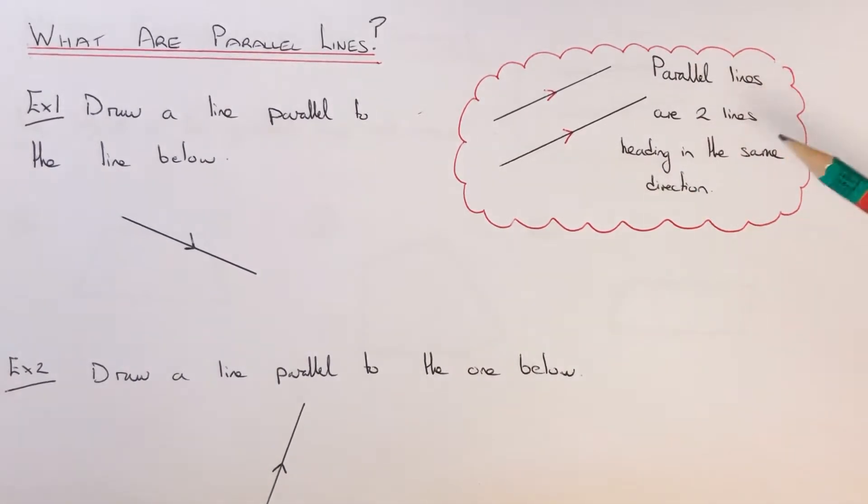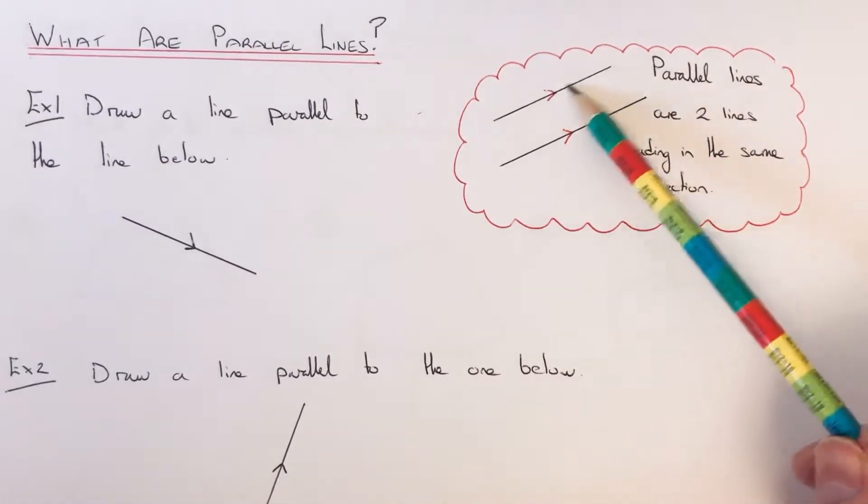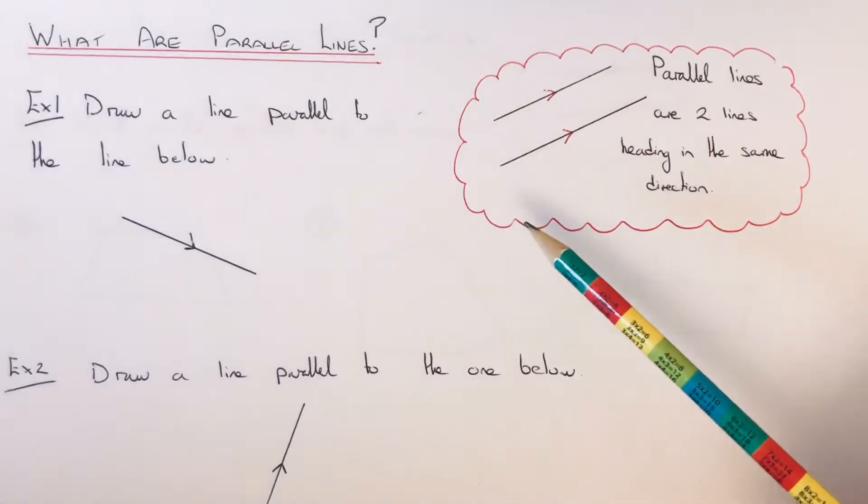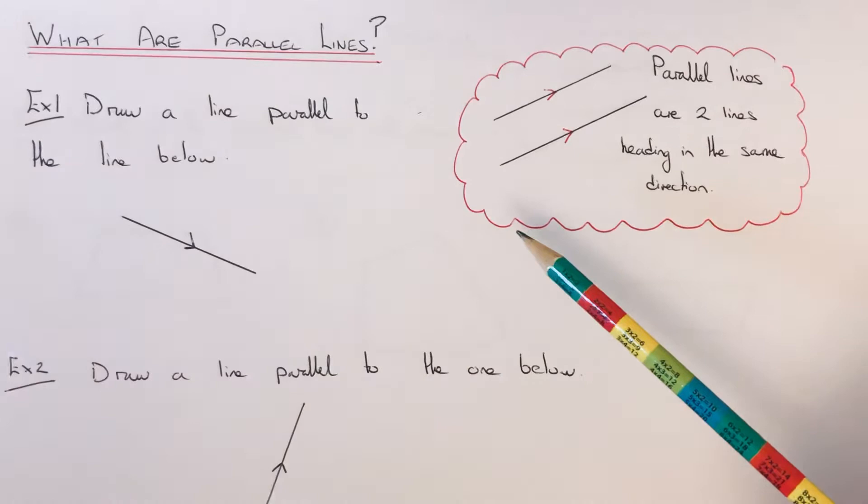If you're just looking at the red cloud here, parallel lines are two lines heading in the same direction. As you can see, the two lines are traveling the same way. And if you extend the lines, the lines will never meet.